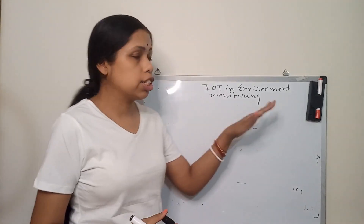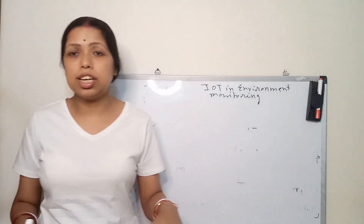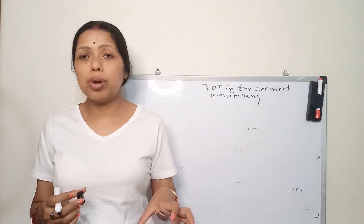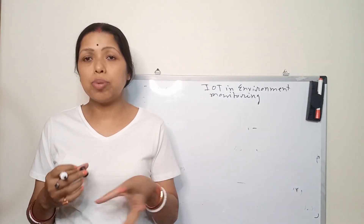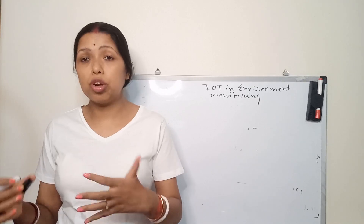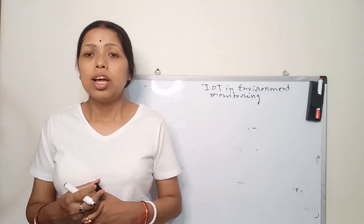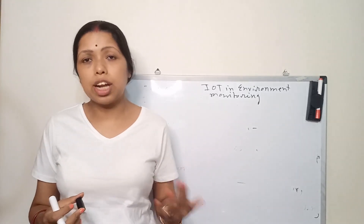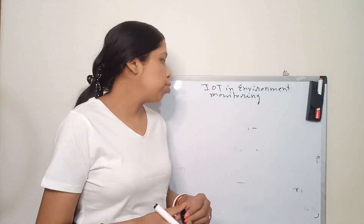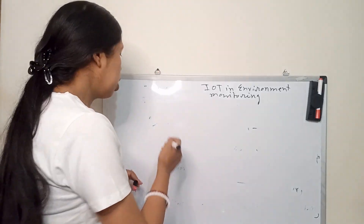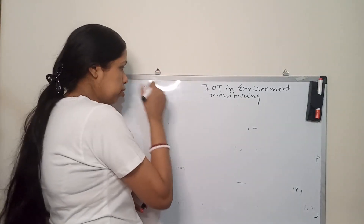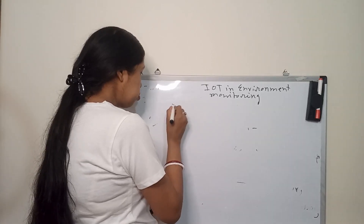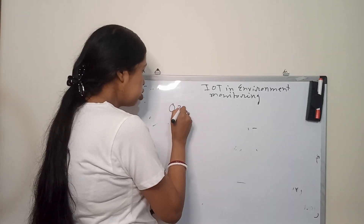Later I will start with the architecture and what are the main parameters from environmental monitoring, what kind of parameters we can monitor, and how we can monitor them — these will be discussed in the next coming lectures. First we come to the ozone sensor.